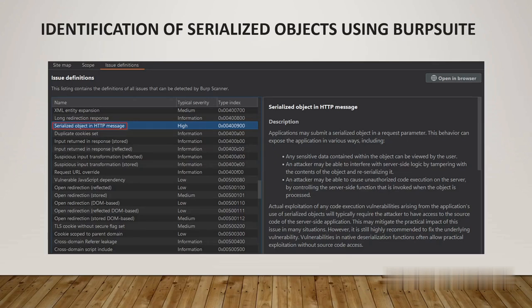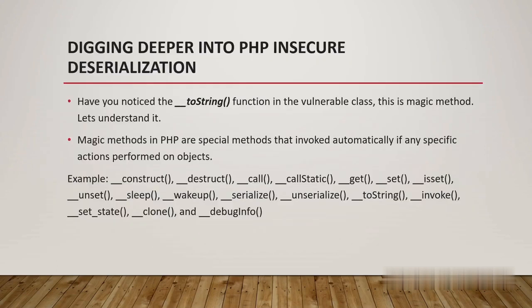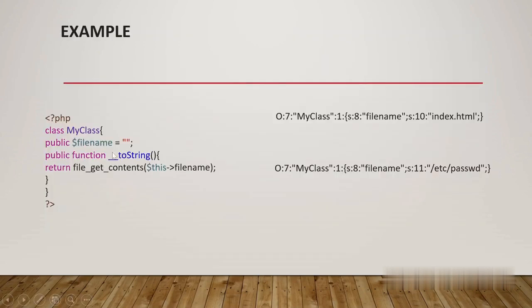How do we identify a serialized object using Burp Suite? Whenever you perform active scanning in Burp Suite Professional, you would identify a serialized object with the message 'Serialized object in HTTP message.' If you are getting this issue in the target tab of Burp Suite, then this would be your injection point to test for insecure deserialization vulnerability.